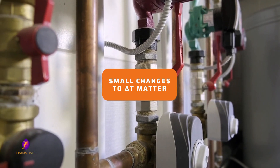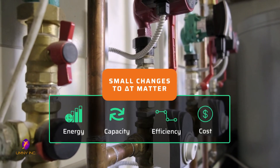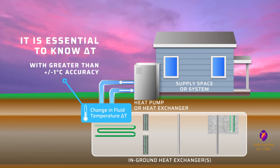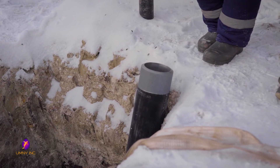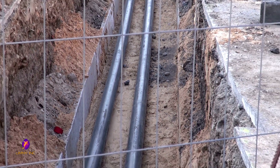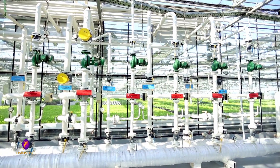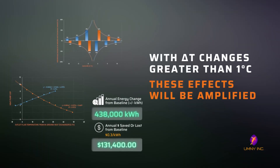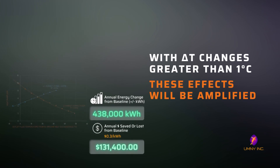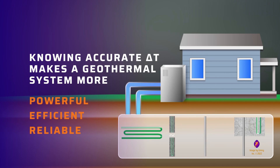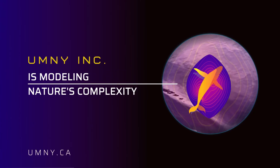Even though it may seem that 1 degree Celsius is a small change that can be ignored in geothermal systems, this change can have a significant impact on performance, efficiency, and cost. It is essential that in the design and operating stages, temperature change across the in-ground heat exchangers is calculated or measured with a tighter accuracy than plus or minus 1 degree. Choices in underground piping — such as foregoing insulation on supply and return lines, spacing close enough to experience thermal interference from other equipment, or having auxiliary systems connected to the same loop — can result in fluid temperature changes beyond the baseline delta T of at least plus or minus 1 degree Celsius. If temperature changes exceed just 1 degree, all effects on performance, efficiency, and cost would be amplified even more. By paying close attention to the change in fluid temperatures, a geothermal system can be more powerful, efficient, and reliable. Head over to the UMNI blog for more information about these calculations and effects.